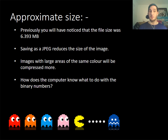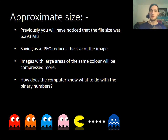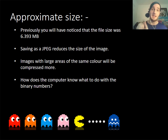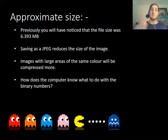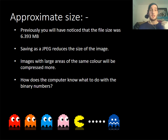The approximate size in that example was 6.3 megabytes. There are also certain compression types you can use - saving as a JPEG will reduce the size of an image. Remember image file types, because many students in exams still make the mistake of putting the wrong file type. A GIF, a JPEG, a BMP, and a PNG are all types of image files. Keep away from PDF, which is used for business documents or scanned files - don't get those mixed up. Remember, when we use JPEGs, images with large areas of the same color have patterns repeated so they are compressed even more.